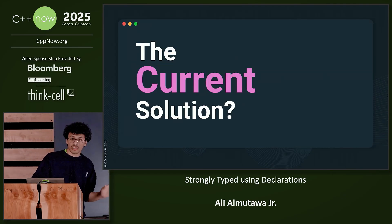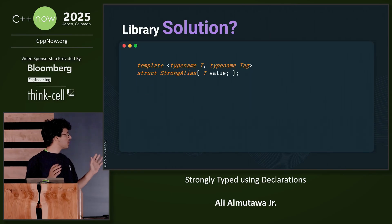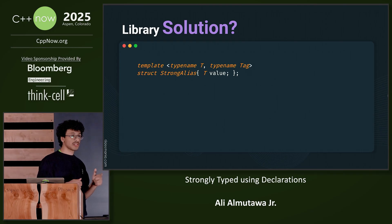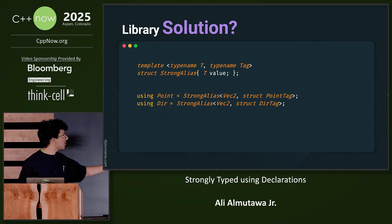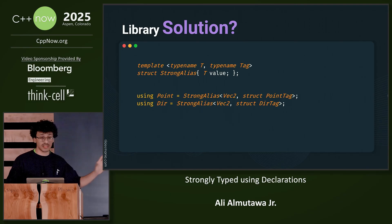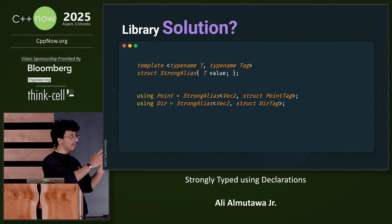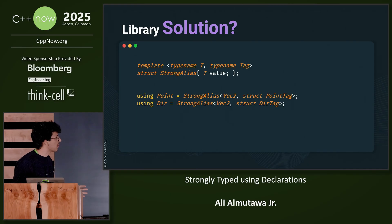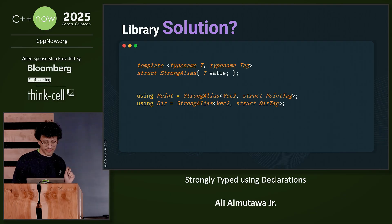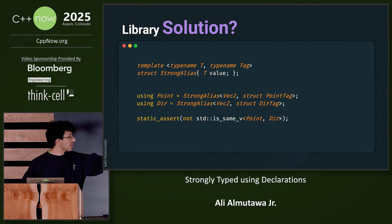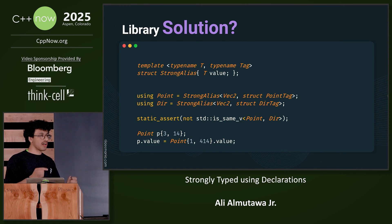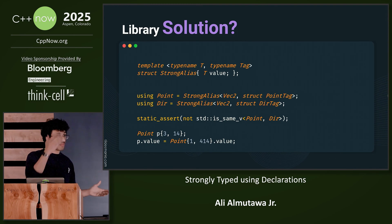I'm going to showcase the current solution that people mostly use. You usually see a class defined like this — strong alias — which you give it the type that you want to alias, but you also have to give it a tag so it doesn't generate the same type again. So a use case would be: using point equals strong alias of vec2, and you give it a struct point tag. The struct point tag class doesn't really exist anywhere else — you don't even have to have a definition for it. Direction is also defined to be a strong alias of vec2 with a different struct tag. These are not the same type, but every time you want to use the actual underlying type, you have to do dot value, and then you have the same issue of swapping the arguments again, because the dot value is still the same underlying type.